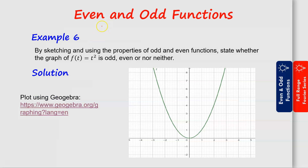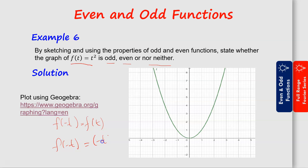Example 6 asks us to sketch and use the properties of odd and even functions to state whether f(t) equals t squared is odd, even, or neither. Plotting with GeoGebra, the graph is clearly symmetric about the y-axis, suggesting it is an even function. Checking the property: f(-t) equals (-t) squared which equals t squared, which equals f(t). So f(-t) equals f(t), confirming that the function is an even function.